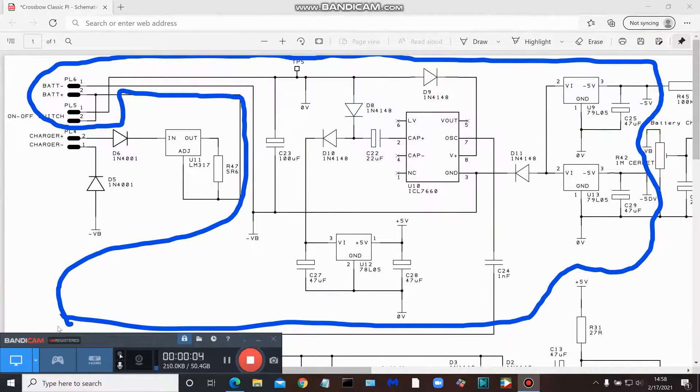At the portion of the schematic that we're going to be working on. As we stated, it is the power supply. So I've outlined here in blue the portion of the schematic to better enable you to gather the appropriate materials to build out the power supply.